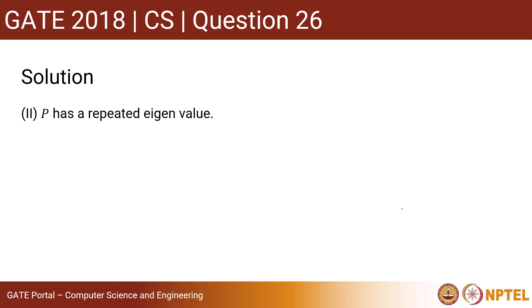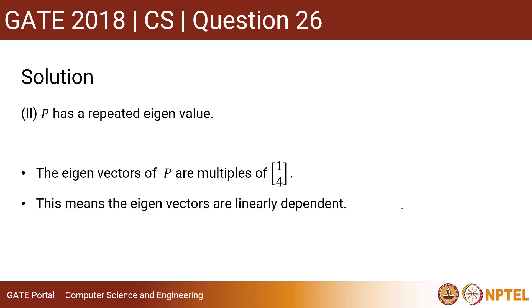Now let's get into the second statement: P has a repeated eigenvalue. The eigenvectors of P are multiples of 1 and 4, so the eigenvectors are linearly dependent. We know that linearly dependent eigenvectors will have repeated eigenvalues. So P has repeated eigenvalues. This statement is true.